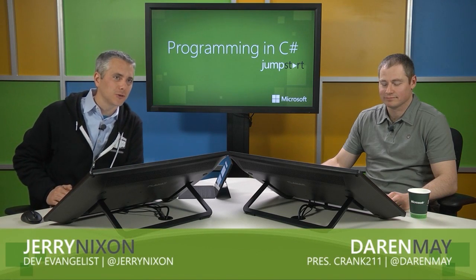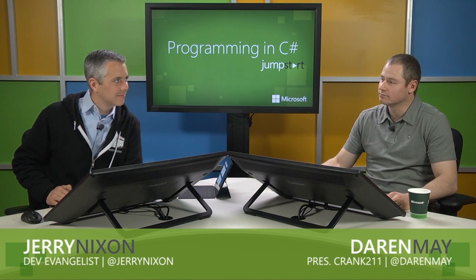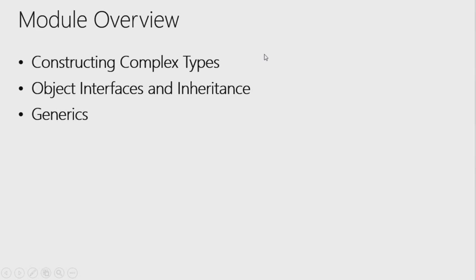Welcome back to module two for C-Sharp Fundamentals. In this module we're going to talk about constructing complex types — how to build out and use the type system to model types that help us solve problems. We're going to start talking about object interfaces and inheritance, really driving into those areas, and then touch on generics, one of the favorite parts of C-Sharp and the .NET managed runtime.